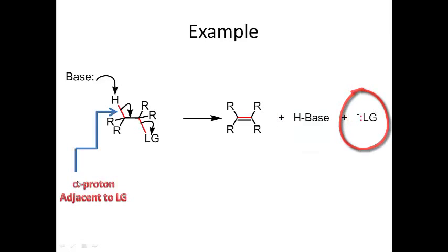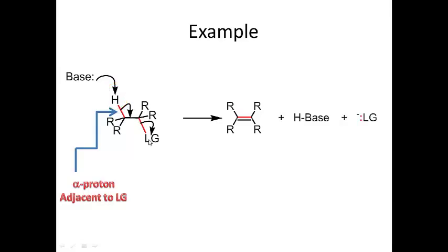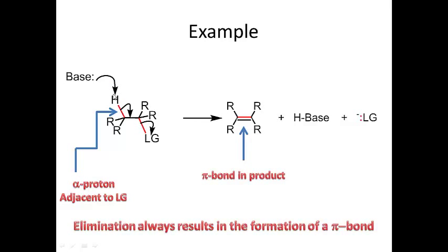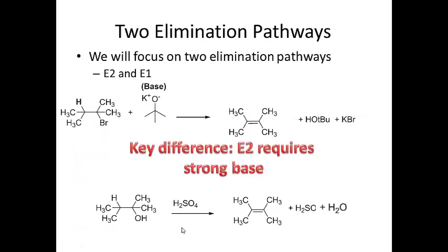In an elimination, we focus on these two adjacent carbons. The proton on the carbon adjacent to the carbon bearing the leaving group is called the alpha proton. In the product, once the alpha proton is removed and those electrons form the new pi bond, we also lose the leaving group. Elimination always results in the formation of a pi bond.